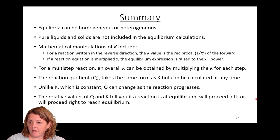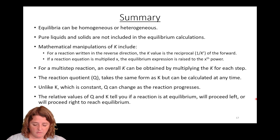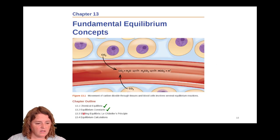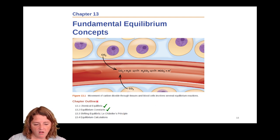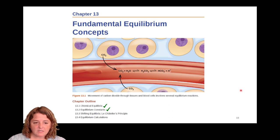Next time we'll pick up with what happens when a system at equilibrium is perturbed and predicting what happens — that's called Le Chatelier's principle. All the stuff we're doing here is very much in the abstract, but this is the building block for where we're headed in Chapters 14 and 15 and beyond. It's worth getting the fundamentals down before we start adding more chemistry to it.